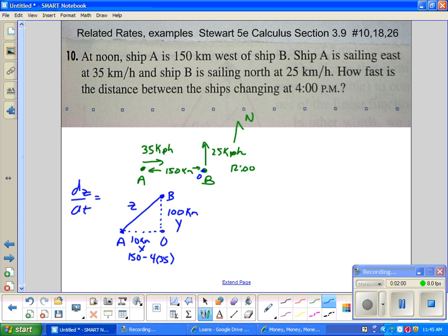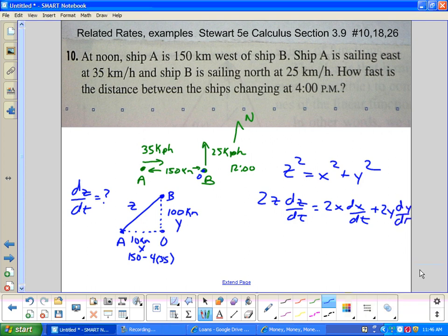Distance equals rate times time. If we use this point here, I'm going to call this the origin point O. B is going to end up up here in four hours at 100 kilometers away. And A is going to close the gap here. A is going to be 150 minus 4 times 35, so that's 10 kilometers. We're going to get the distance here. I'll call this Z, this Y, and this X. These are the fixed values. You're looking for dZ/dt.